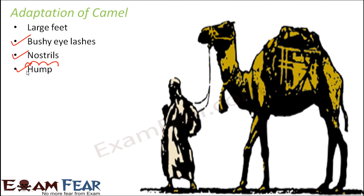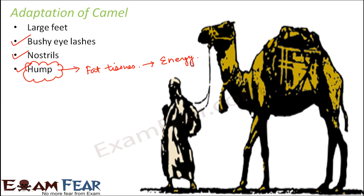The hump is a very special feature of the camel. It is the storehouse of energy, storing energy in the form of fat tissues. When there is a scarcity of food, the fat stored in the hump is metabolized to provide energy. Many people think the hump stores water — that is not correct. Since fats are a rich source of energy, the hump allows the camel to survive periods without food, which is common in desert areas.